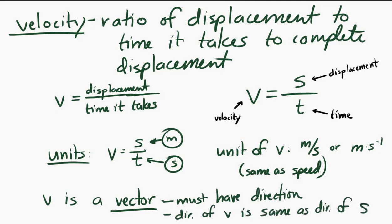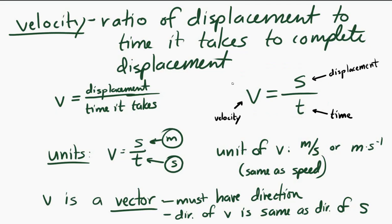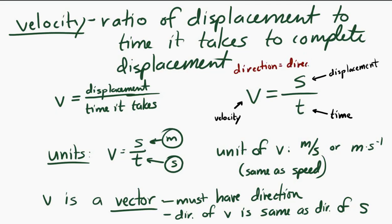The direction of the velocity is the same as the direction of the displacement. So if you look at our equation, v equals s over t, another thing that an equation tells you is that everything on both sides must be the same. We're used to seeing that the numbers and units must match on both sides. But it also turns out that if you're talking about vectors, the direction has to be the same on both sides. So if velocity equals displacement over time, and displacement has a direction, that direction must be the same as the direction of the velocity on the other side of the equation.